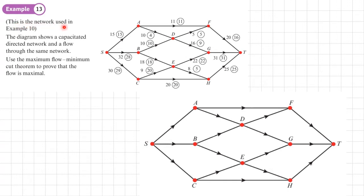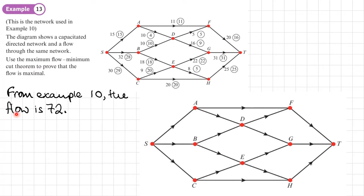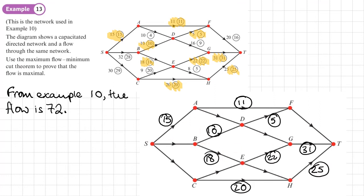Example 13 uses the network from example 10. Rather than re-running the maximum flow algorithm, we use the result from that example: the flow is 72. The saturated arcs are identified and marked on the larger diagram. We now try to find a minimum cut passing through these saturated arcs — there may be more than one valid answer.